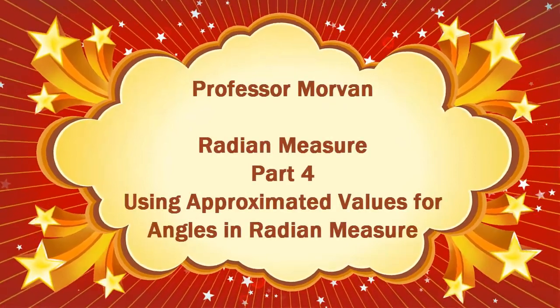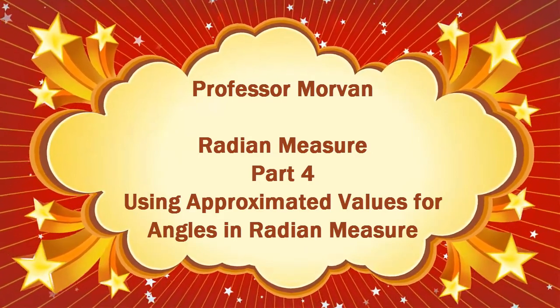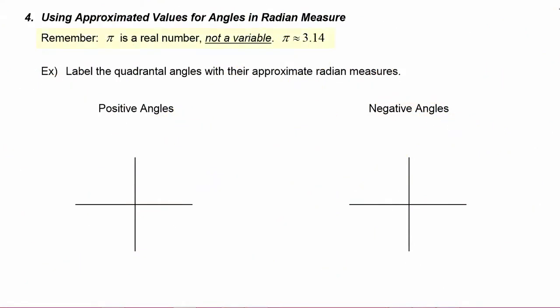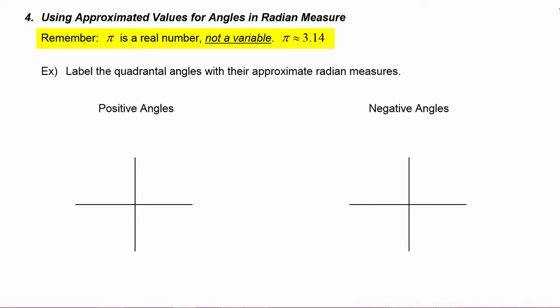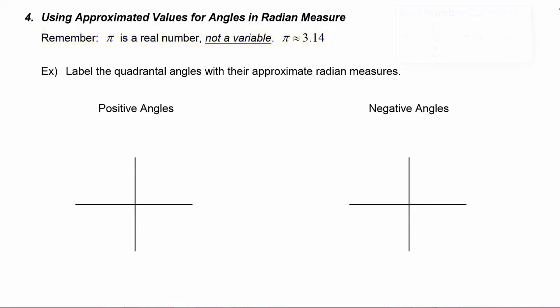In part four of our lesson on radian measure, you're going to learn about using approximated values for angles in radian measure. The first thing to remember is that pi is a real number, not a variable. Pi is approximately 3.14, and a common error some students make is to think of it as a variable, when actually it is a constant — just like the number 7, one-half, or negative 2.9 are constants.